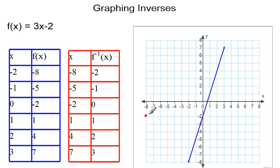Here's negative 8 comma negative 2, negative 5 comma negative 1, negative 2 comma 0, 1 comma 1, 4 comma 2, and 7 comma 3.